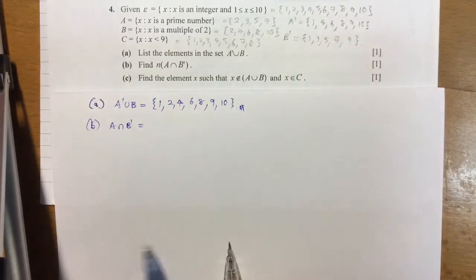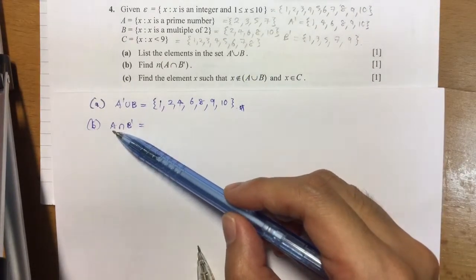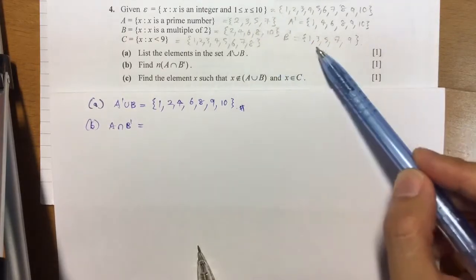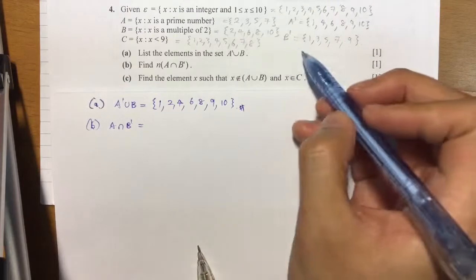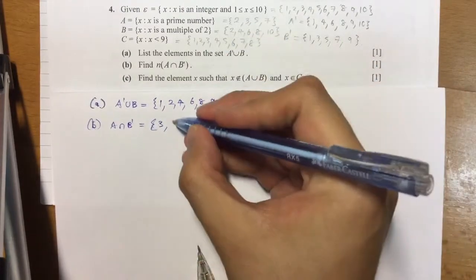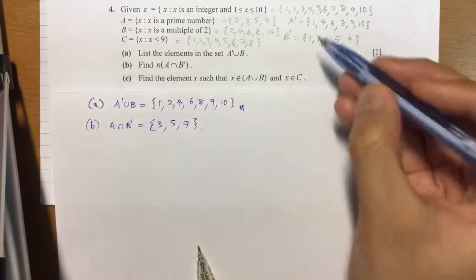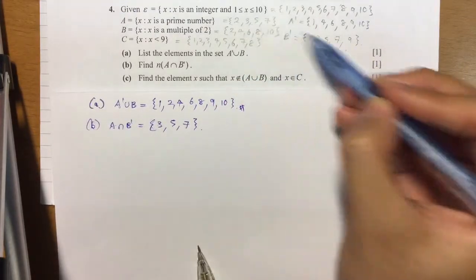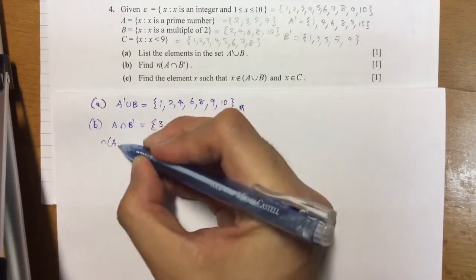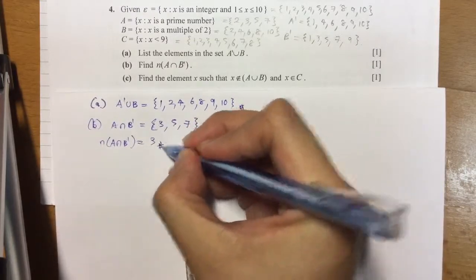Okay, so now let's take a look. Anything that's in common, intersect between set A and B complement. So what's in common between all these? We see a 3, we see 5 and we see 7. Just 3 elements, 3, 5 and 7. So how many elements are there inside here? Just simple counting and we have 3 elements.